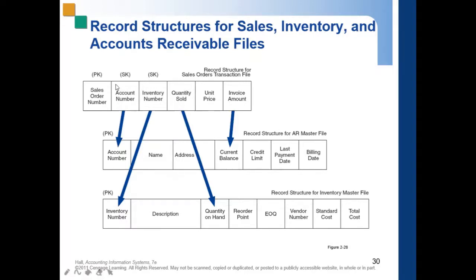PK here stands for primary key. A primary key is unique to that file — it cannot be replaced as a part of that record.